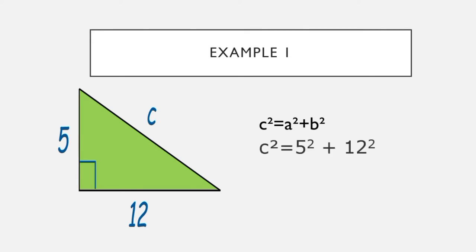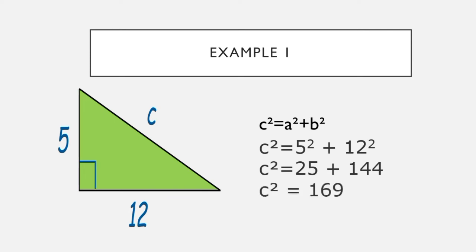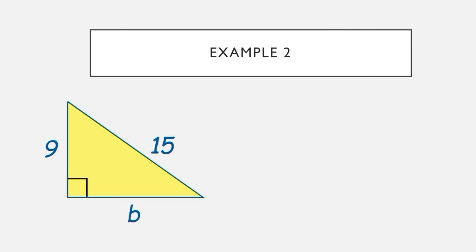We put in the values of the opposite and adjacent: C squared is equal to 5 squared plus 12 squared, where A is 5 and B is 12. Simplifying: 5 squared is 25 and 12 squared is 144. Adding the two values, 25 plus 144 equals 169. Since 169 is a perfect square, taking the square root gives us 13. So our missing hypotenuse value is 13.